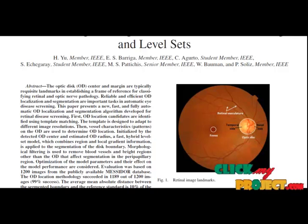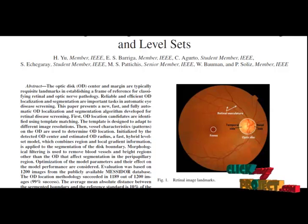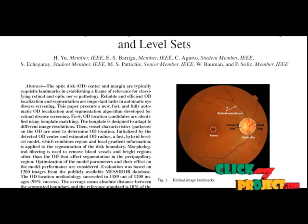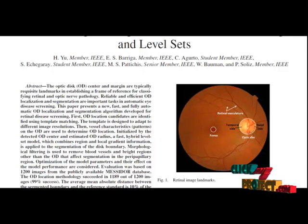From the OD location, we find the cup regions, and by using the cup-to-disk ratio, we estimate whether the given image is at a normal or abnormal level.